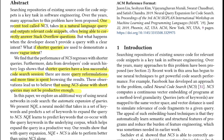They came up with NQE, which automatically expands the query by predicting keywords that co-occur with the query words in the underlying corpus. Those co-occurring keywords are appended to the existing query, after which NCS is applied. NQE combined with NCS was able to perform better than using just NCS alone.